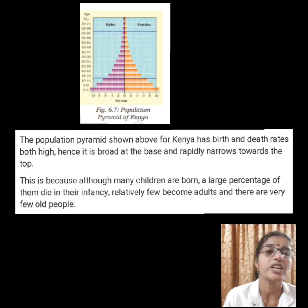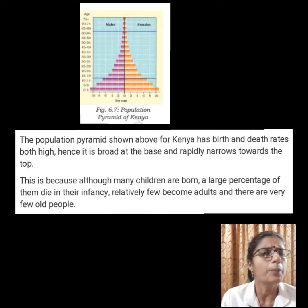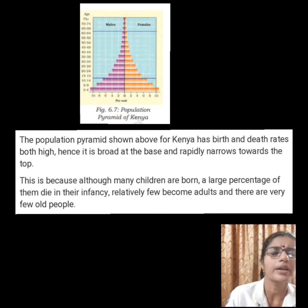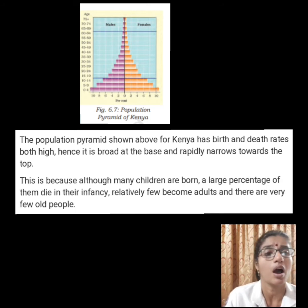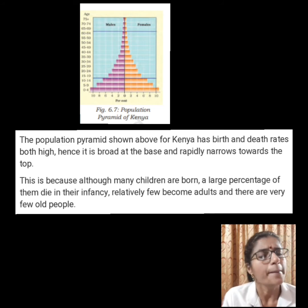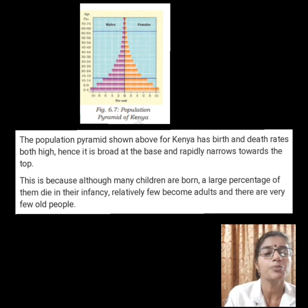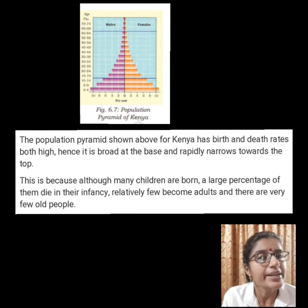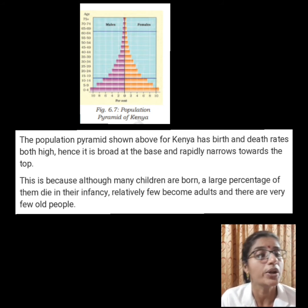Now let's check the population pyramid of various countries. See the population pyramid of Kenya. Here we can see the birth rate and death rates are both high because it is broad at the base and rapidly narrows towards the top. Although many children are born, a large percent of them die in their infancy. Hence, relatively few become adults and there are very few old people.